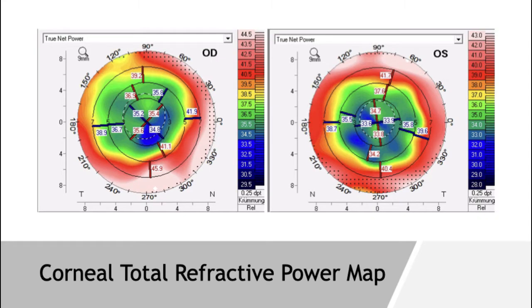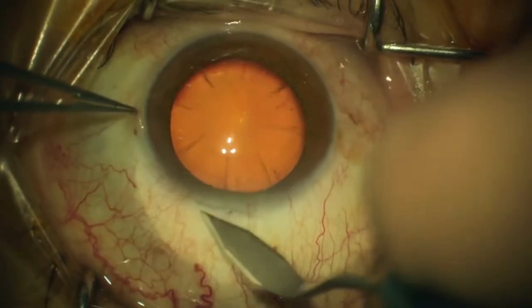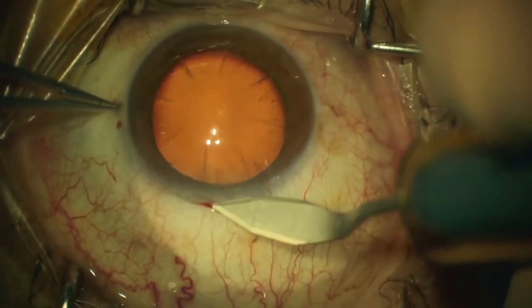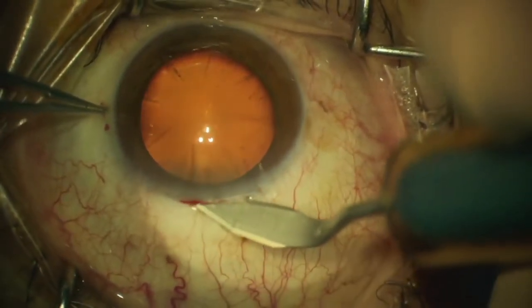Corneal tomography confirmed the cause of post-RK regression. The central cornea had flattened significantly to 33 diopters with a gradient of 7 diopters to the steep mid-periphery. Spherical aberration was significant. The surgical approach must consider the corneal weakness due to the eight radial incisions reaching far out to the corneal periphery.